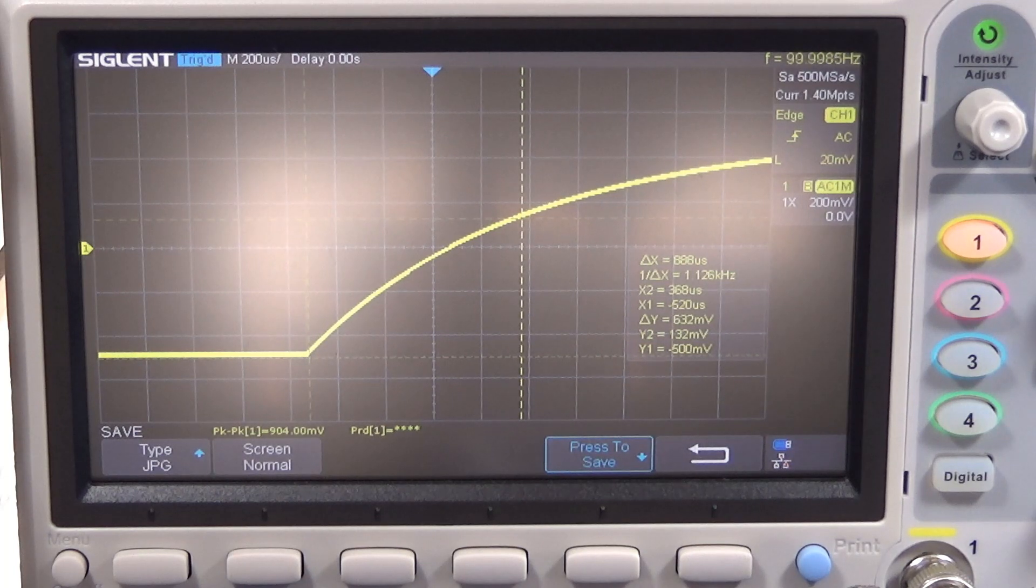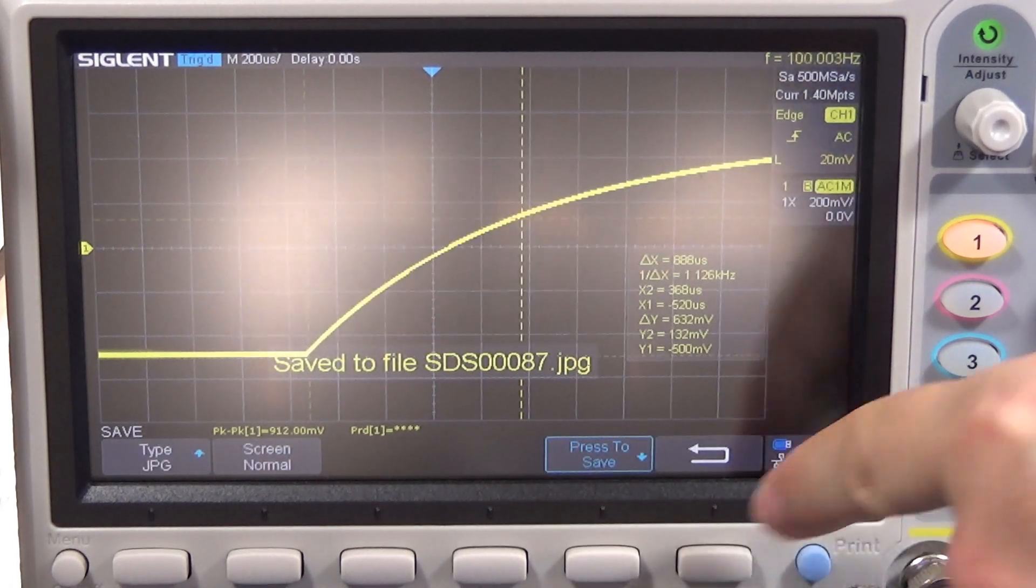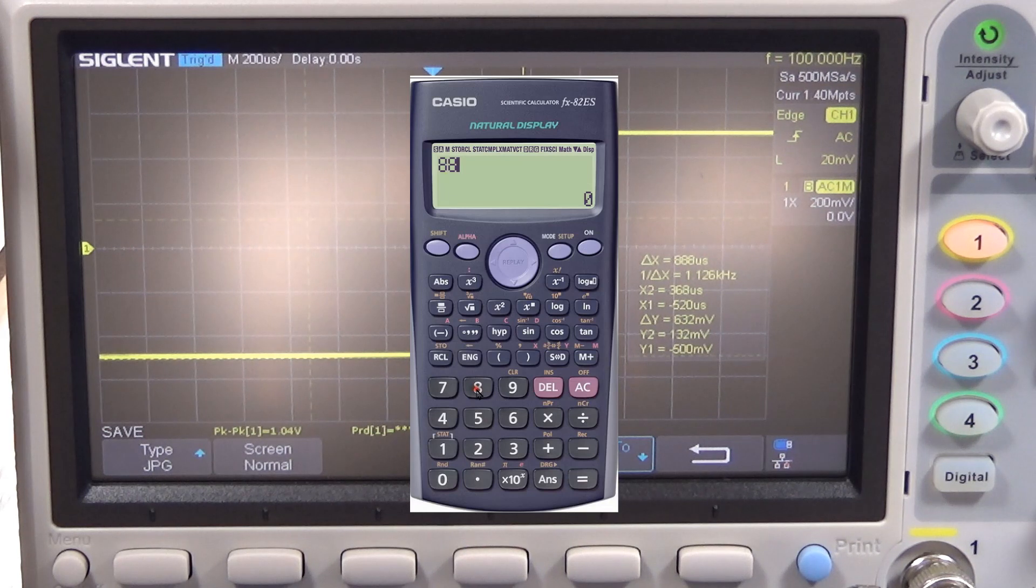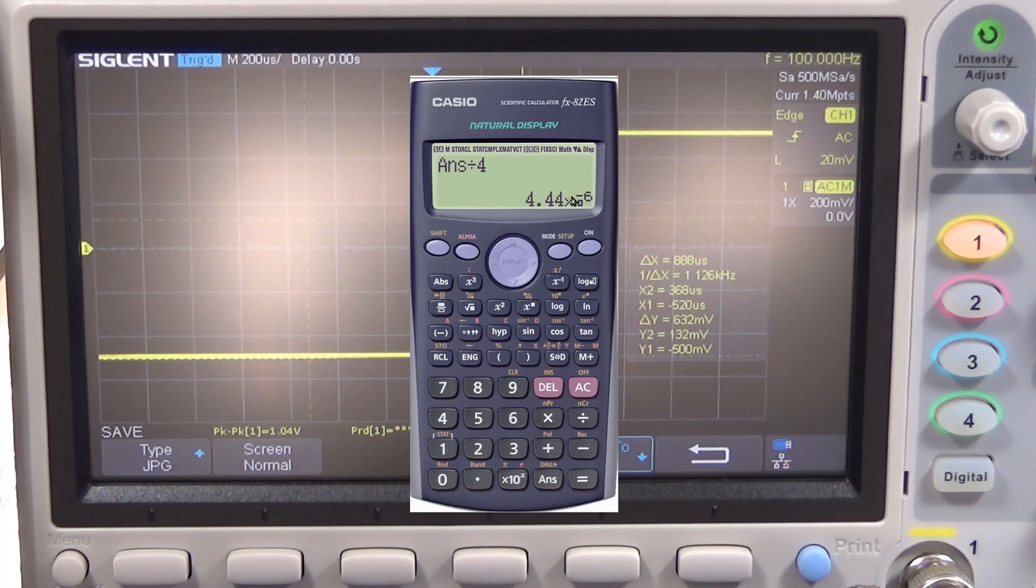188 microseconds divided by 50 ohms equals 17.76 microfarads. But there are four capacitors in parallel, so I have to divide this value by four. So I have 4.44 microfarads per capacitor. Probably this is 4.7 microfarad capacitor, each one of them.